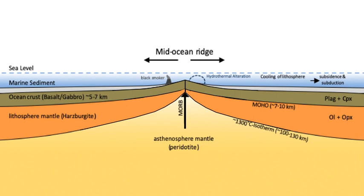The mid-ocean ridge will then expand and form a broader ridge, taking up more space in the ocean basin and causing sea levels to rise. Sea level change can be attributed to other factors—thermal expansion, ice melting—but over very long timescales it is the result of changes in the volume of the ocean basins which are, in turn, affected by rates of seafloor spreading along the mid-ocean ridges.